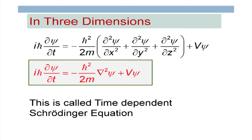In three dimensions, the equation is written using the del-squared operator. All that changes is that ∂²ψ/∂x² is replaced by the del-squared operator. I define this operator but do not discuss it in detail until we do a particle in a three-dimensional box, since at this point students have not yet done the electrodynamics course where they learn about del-squared operators.